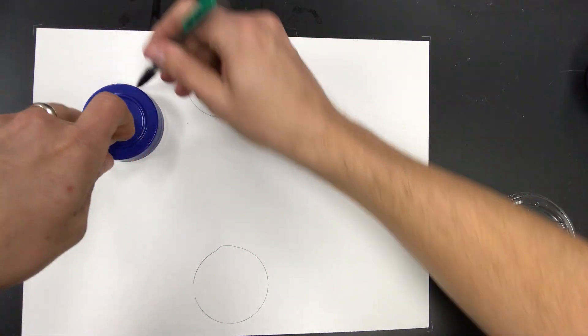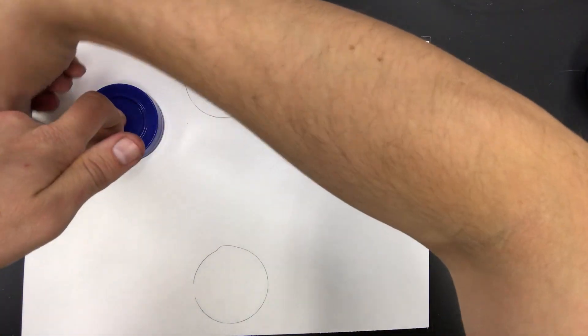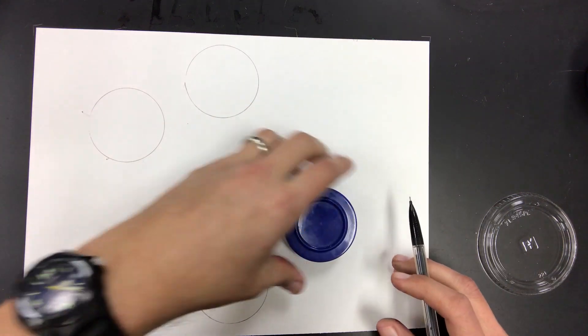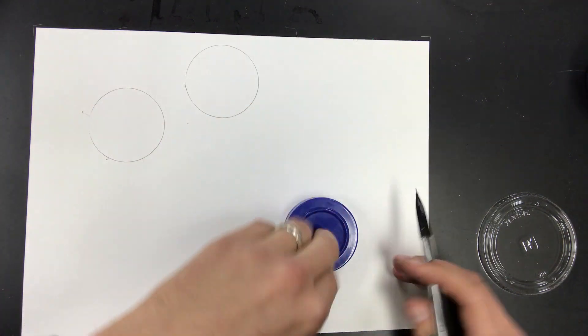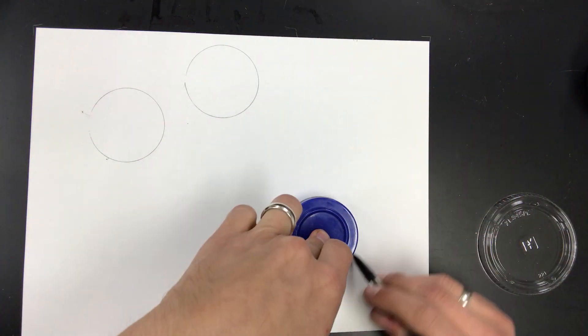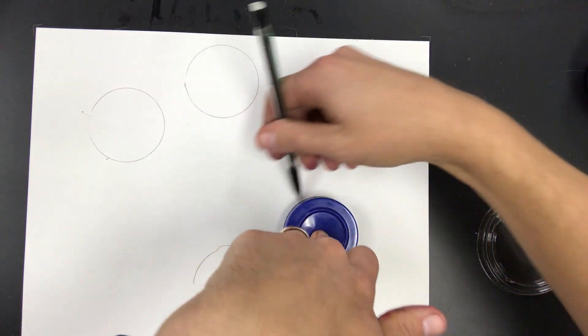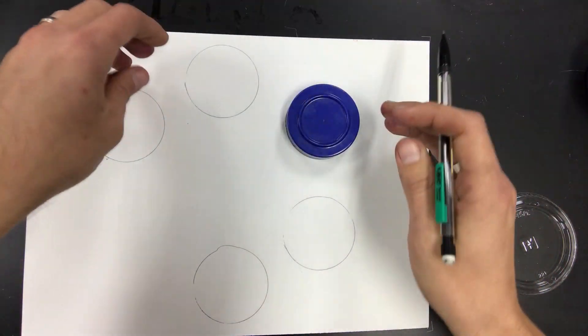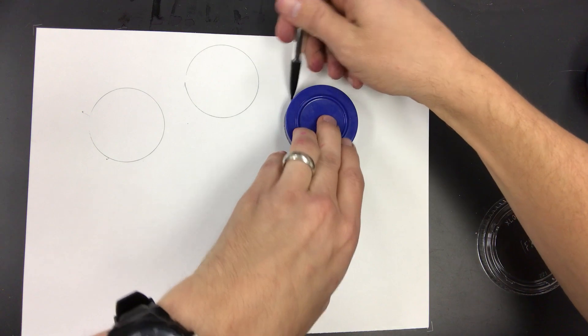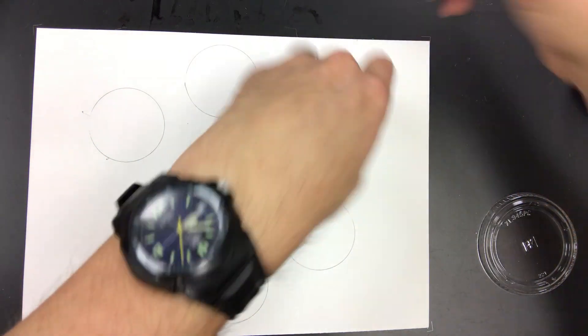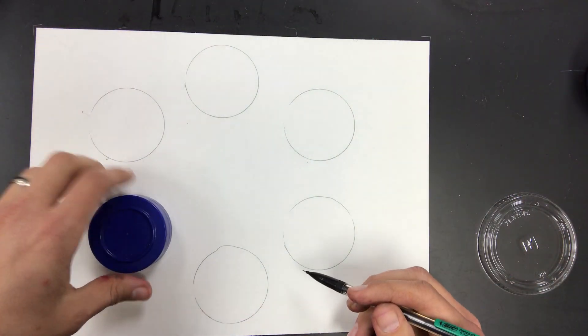I think this is a better way to keep everything symmetrical, but do it however you see fit. Do one here, go across to here. It's okay if they're not lined up perfectly. Do one over in this section and then one over here.